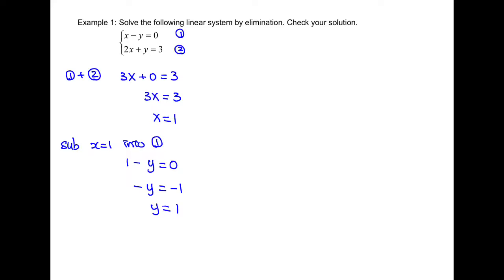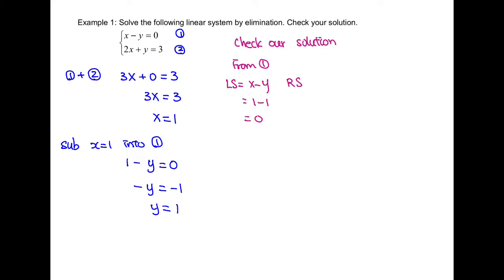Often the question will ask you to check your solution. From equation 1, we write down the left-hand side, which is x minus y, and substitute the values we just found to see what the value is. In this case, the left-hand side equals 0. We write down the right-hand side of equation 1, which is also 0. Since left-hand side equals right-hand side, the point (1, 1) is on line 1.